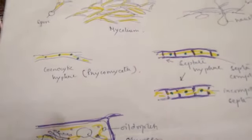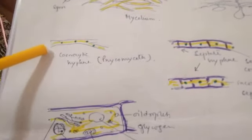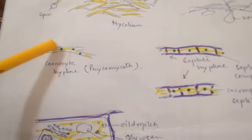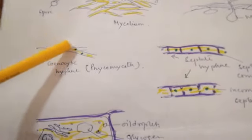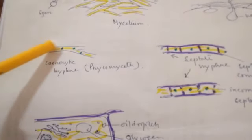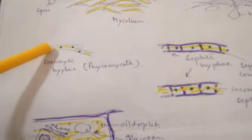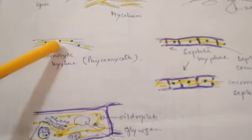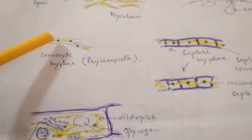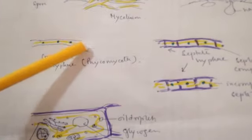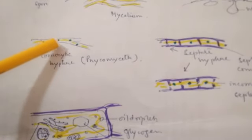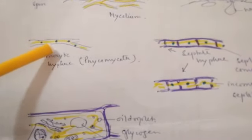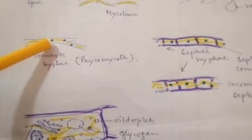Another feature is the hyphae. In some hyphae there is no wall in between cells, so it is a multi-nucleate condition. This is called coenocytic hyphae, or multinucleate hyphae, found in the lower groups of fungi. There are no cross walls between cells, so the tubular structure of a single hypha contains numerous nuclei.